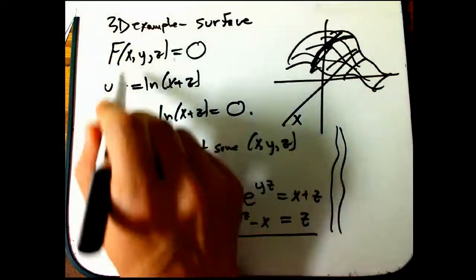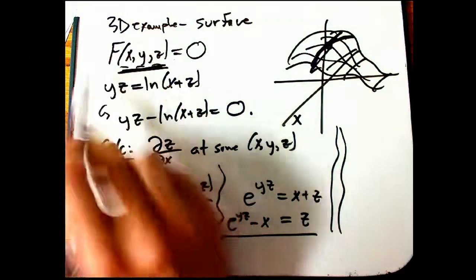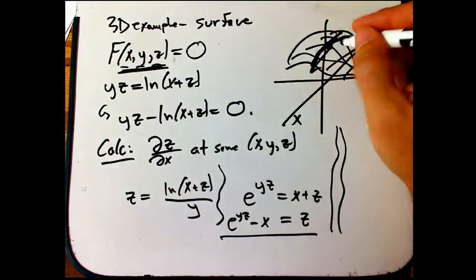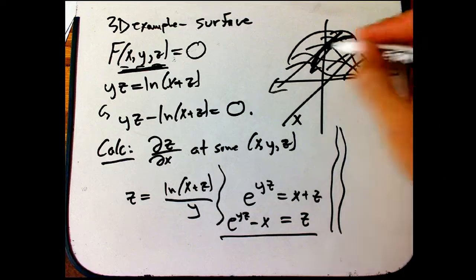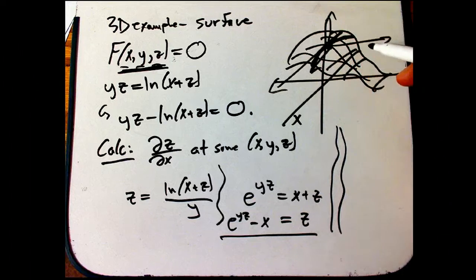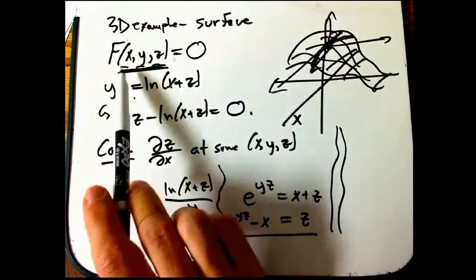One is where I think of x, y, and z all on the same footing. That's the big F perspective, where I could, in principle, move purely in the x direction without staying on the surface, purely in the y direction, purely in the z direction. And that's the sort of, I would say, the big F perspective.